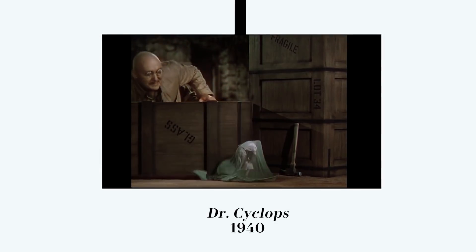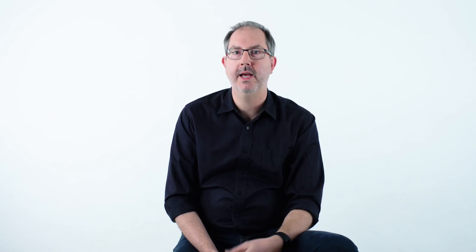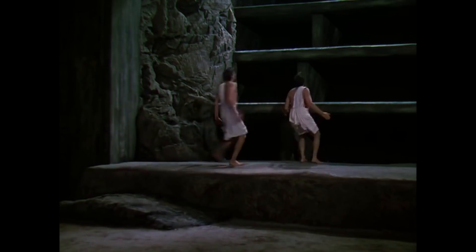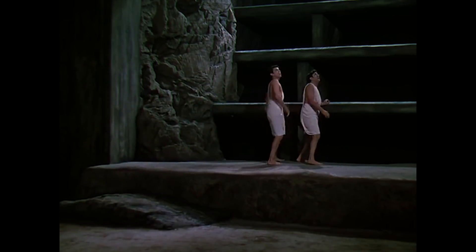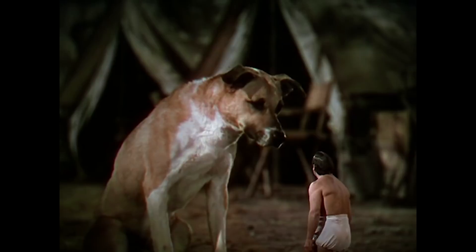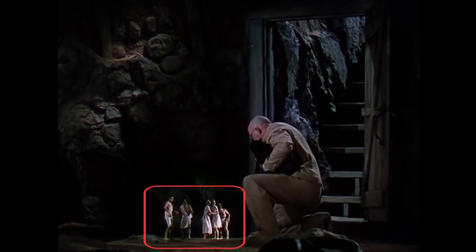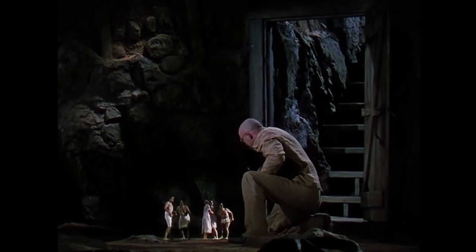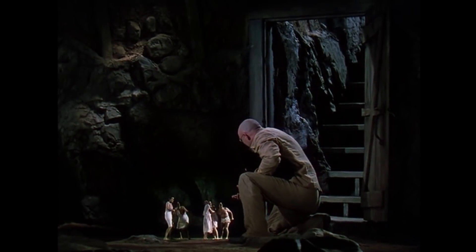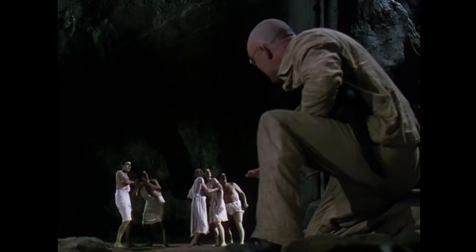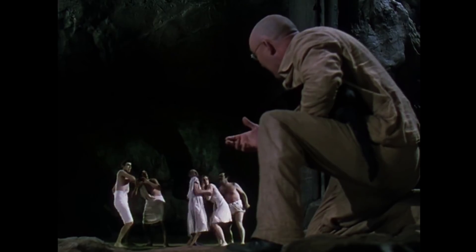In 1940, Dr. Cyclops was being done, and that was in color. The Williams process wasn't really suitable for color, and so a lot of the solutions in Dr. Cyclops were to use rear projection. The background projection image was big, the people in the foreground appeared small, and in the final shot you saw the mix of the scales.